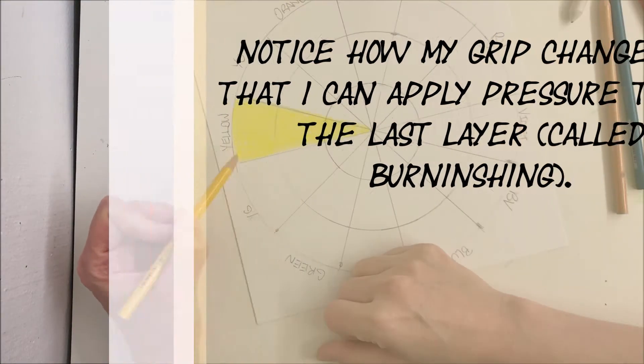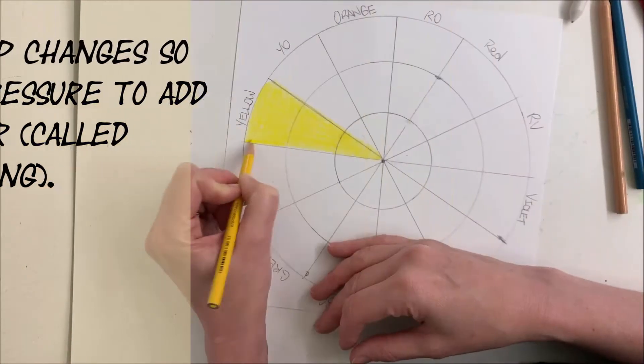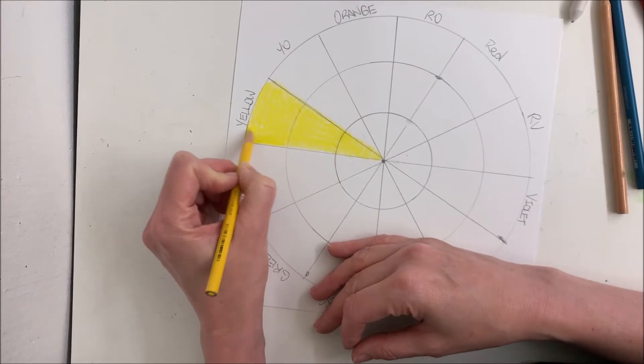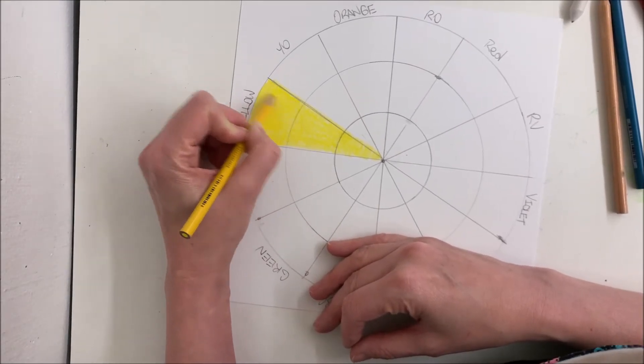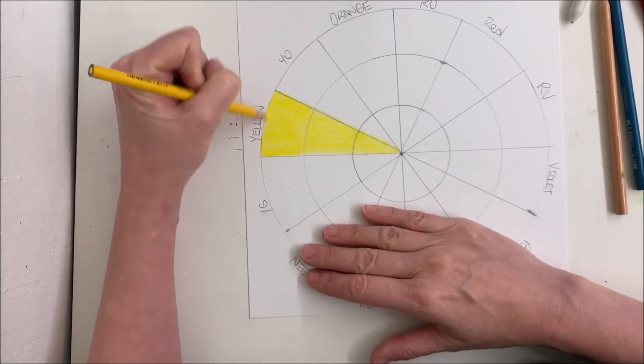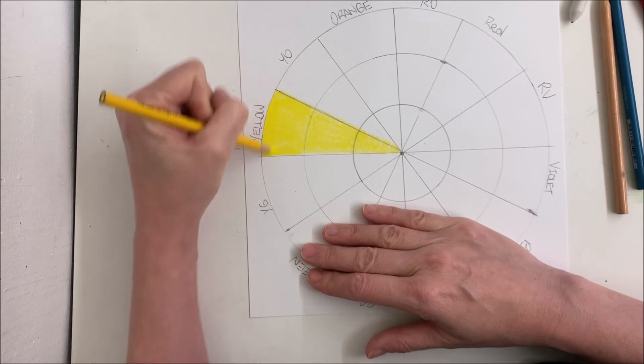Now I'm switching my grip so that I'm holding it more like a pencil. And I'm going to apply firmer pressure only on this outside wedge. I want this outside wedge to be solid because I'm not going to put anything over top of it. You want to get it to that burnishing point. Remember burnishing?